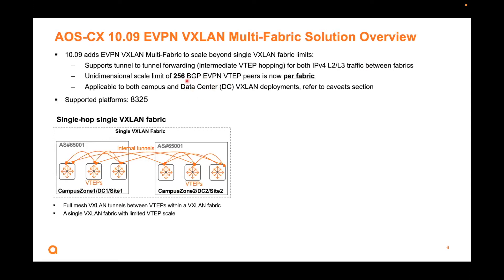But if you do VSX, you basically halve it to 128, because every switch will need to handle the control plane. If you use VSX, you'll basically get 128 EVPN peers.